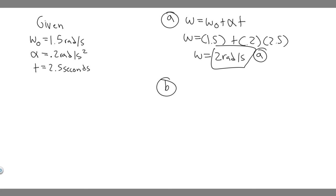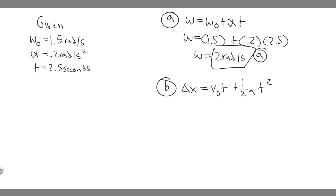Now let's move on to part B: through what angle has the wheel turned between t equals 0 and t equals 2.5 seconds? The equation to use here — thinking of the normal kinematics equation delta x equals V_0 times t plus one-half A t squared — for rotational motion, delta x becomes the change in angle. So we use: theta equals omega_0 times t plus one-half alpha t squared.